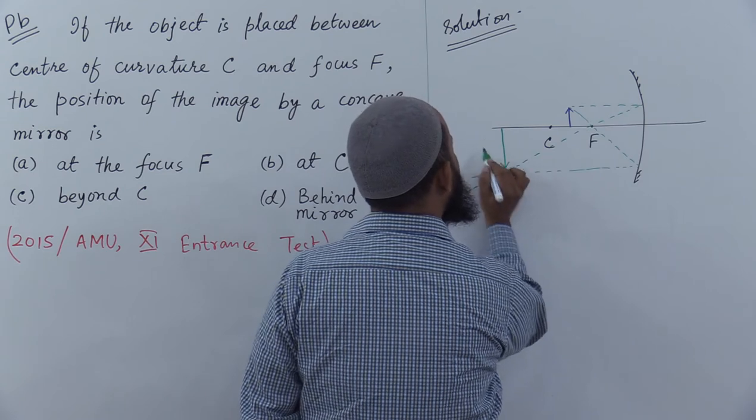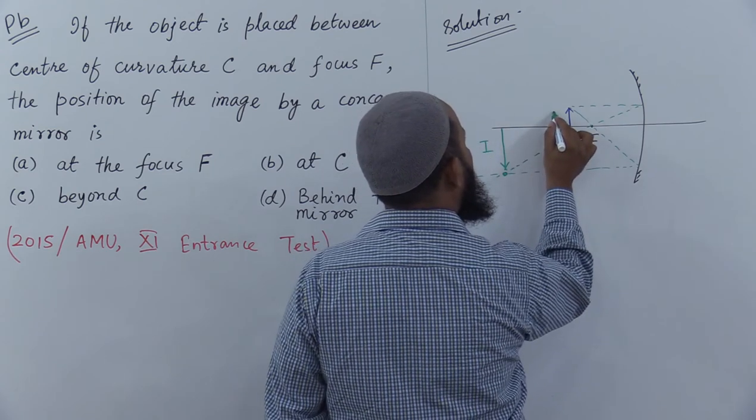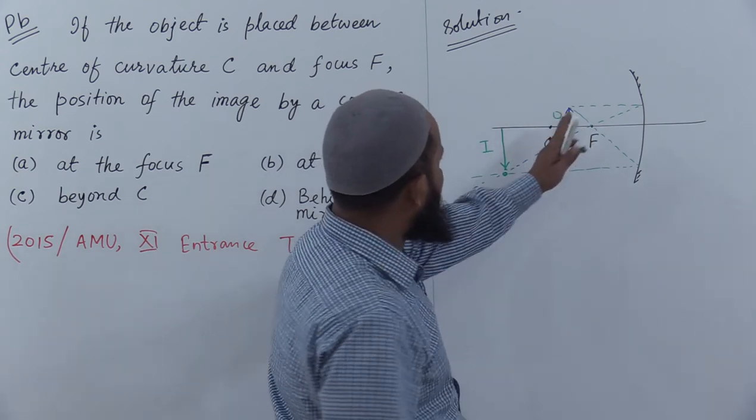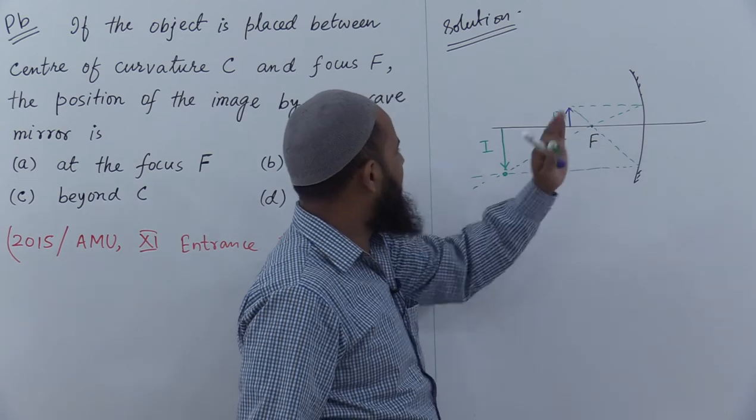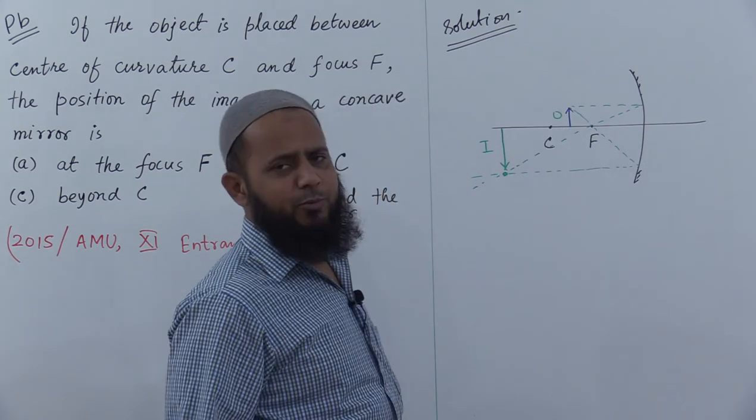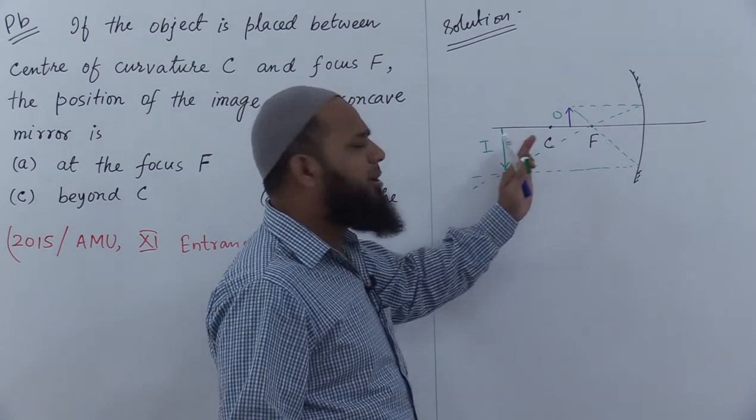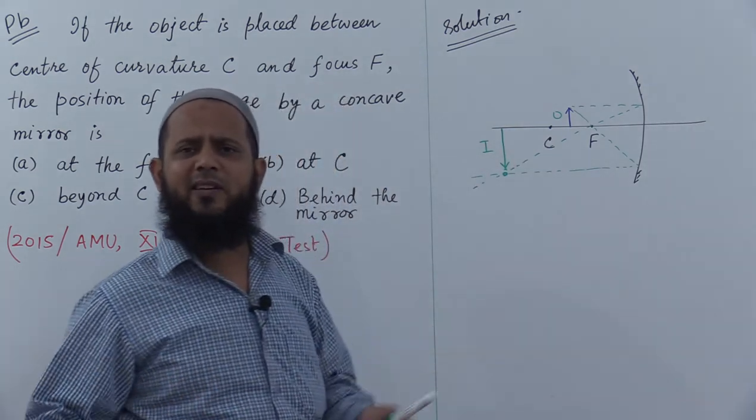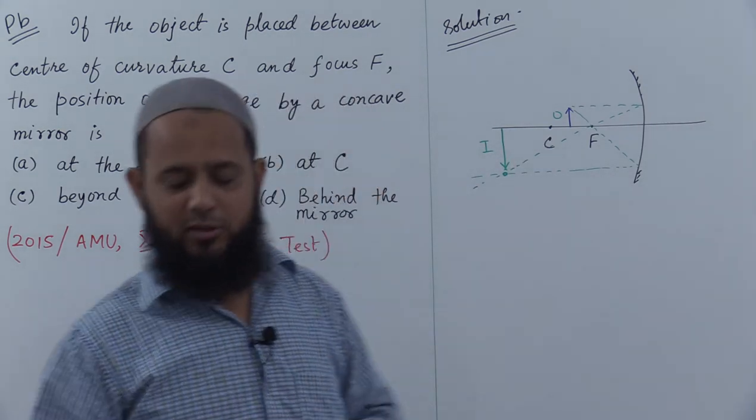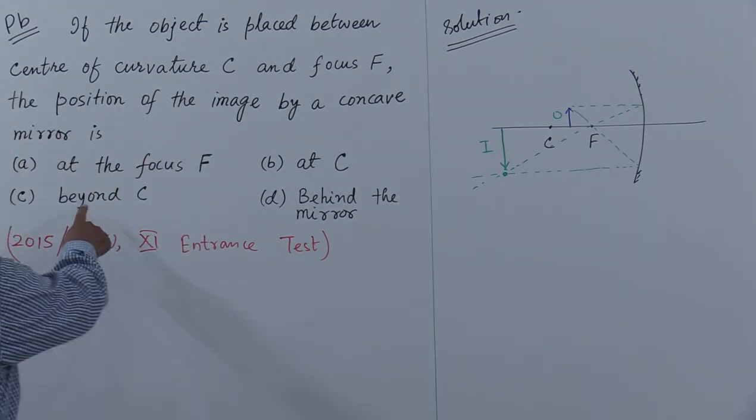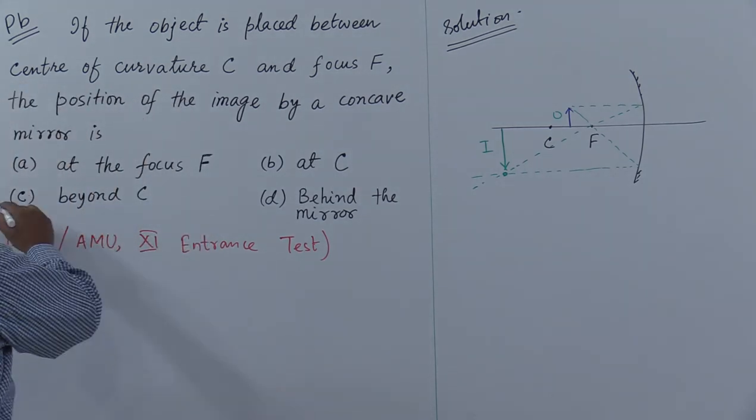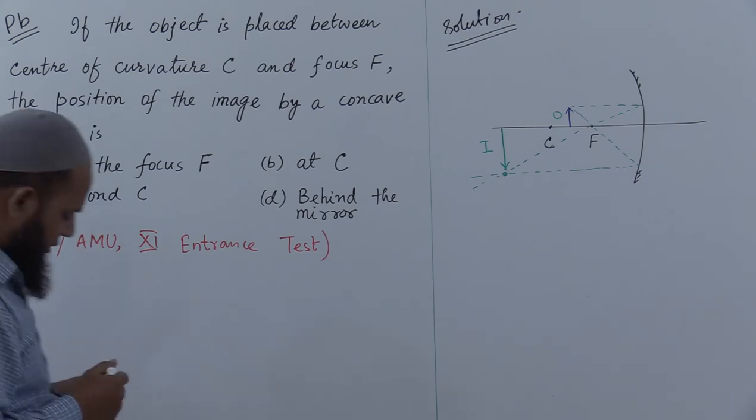This is the image and this is the object. The object position is between C and F, and where is the image made? The image is formed beyond C. So we can say beyond C - this is the correct answer.